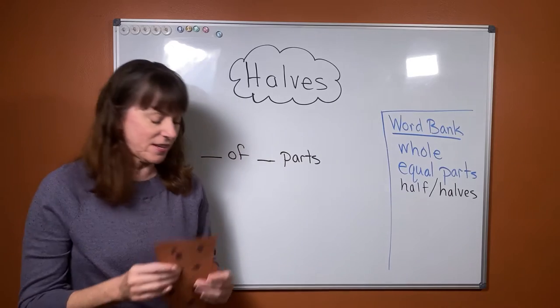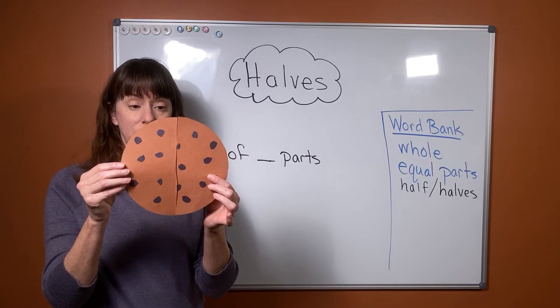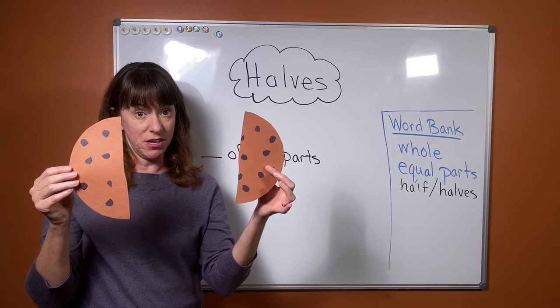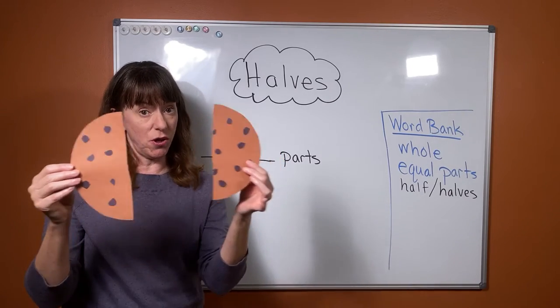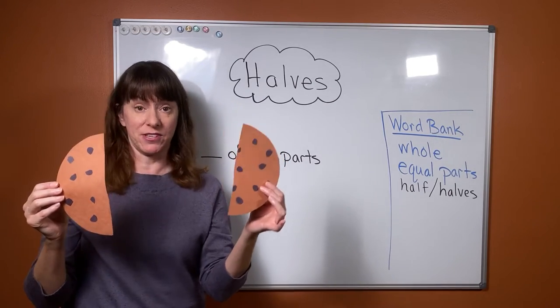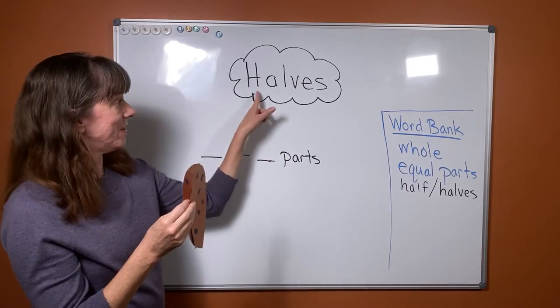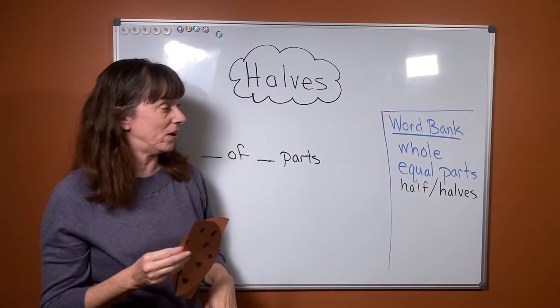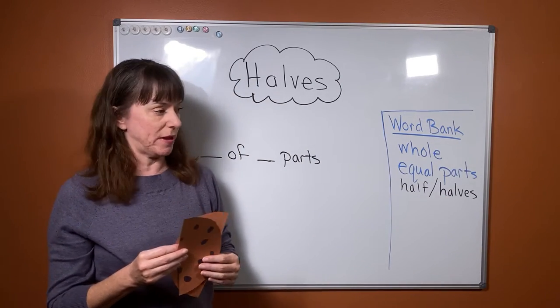The first thing I want to do is show that if you have a whole that has been separated into two equal parts, you call those halves. Let's all say that word: halves. Here it is right here, it's also in our word bank.